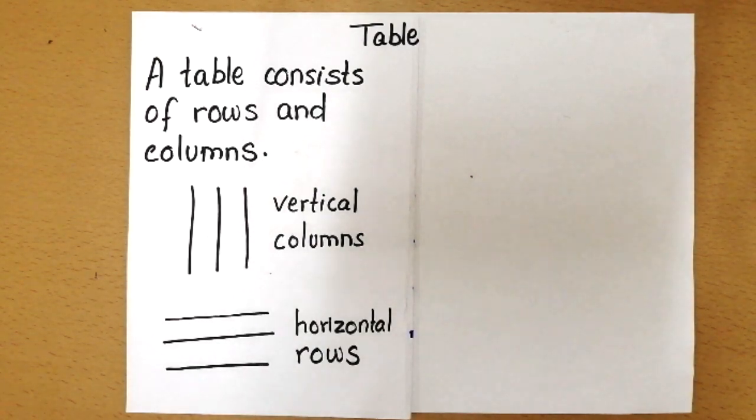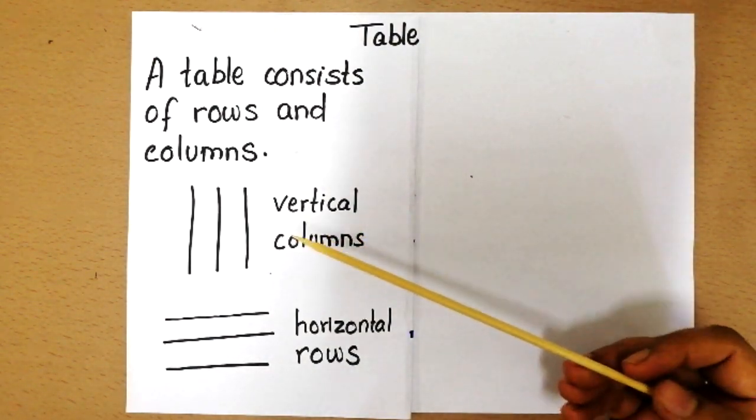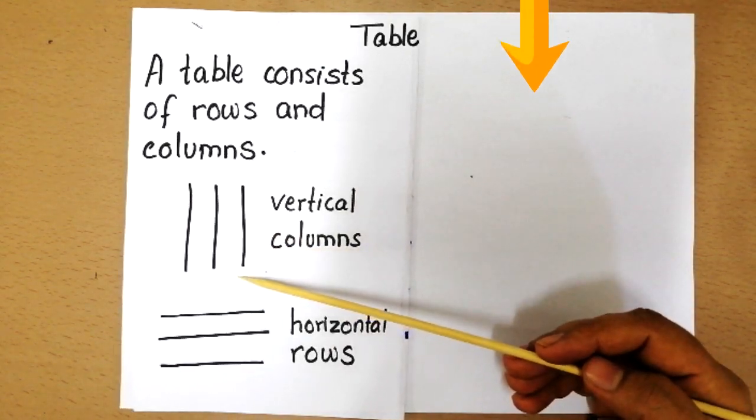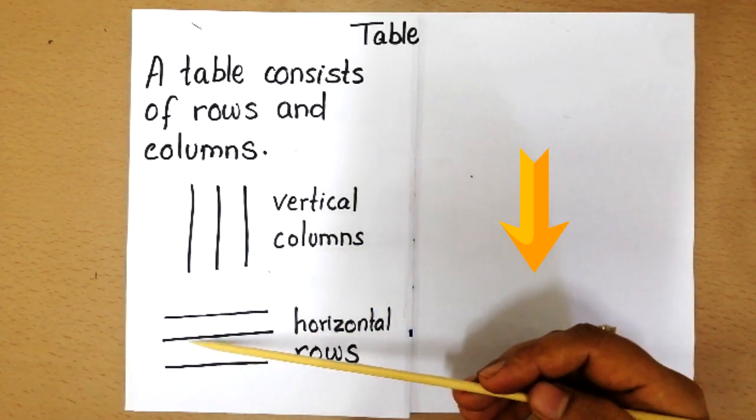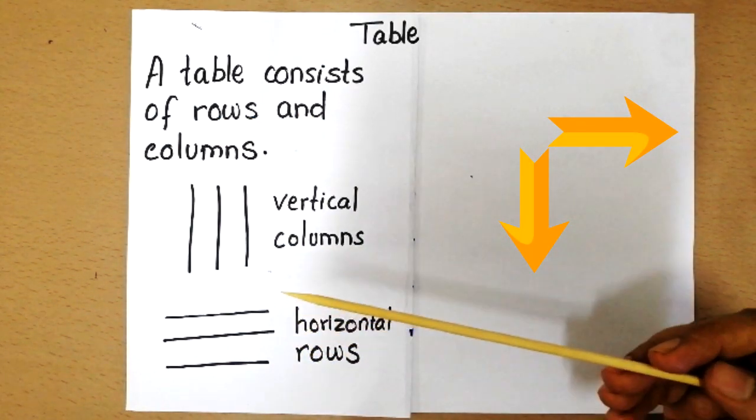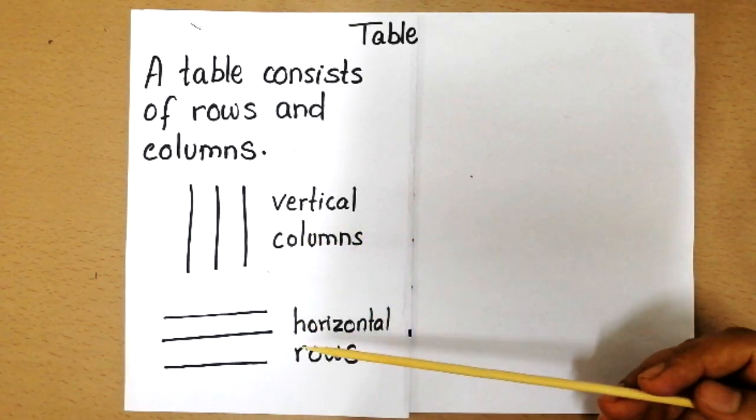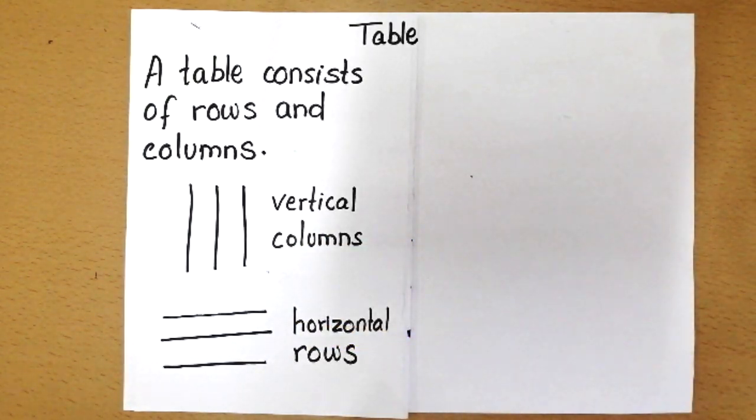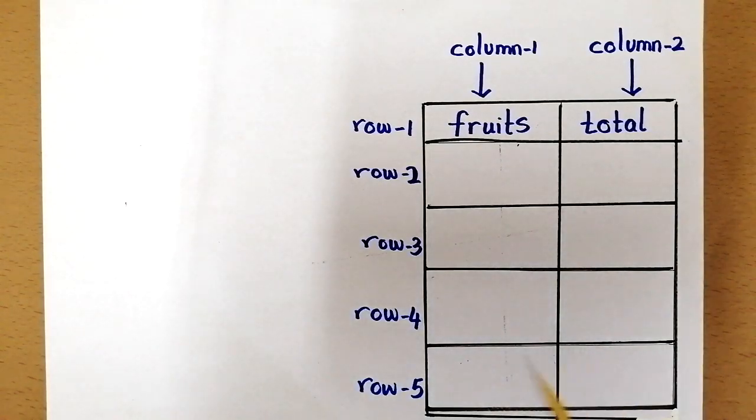Let's learn how to make a table now. What is a table? A table consists of rows and columns. Columns run vertically down and rows run horizontally. When rows and columns are put together, they make a table.